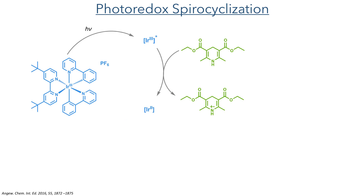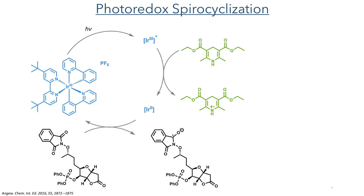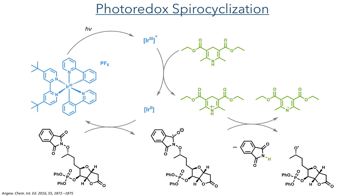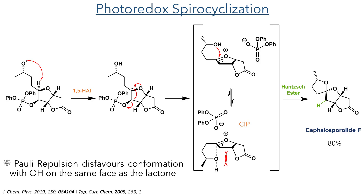With this complete, they could then carry out the spirocyclisation. This was done using photoredox chemistry. An iridium catalyst is first irradiated with UV light to generate an excited iridium(III) species. This is then reduced by a Hantzsch ester to form an iridium(II) complex. It is this iridium(II) complex that first reacts with the substrate, carrying out a 1-electron reduction of the phthalimide group. Reaction of this compound with the oxidised Hantzsch ester eliminates hydroxyphthalimide to produce a radical residing on the secondary oxygen. A 1,5-hydrogen atom transfer then occurs, forming a radical at the tertiary ether that triggers the heterolysis of the phosphate group.